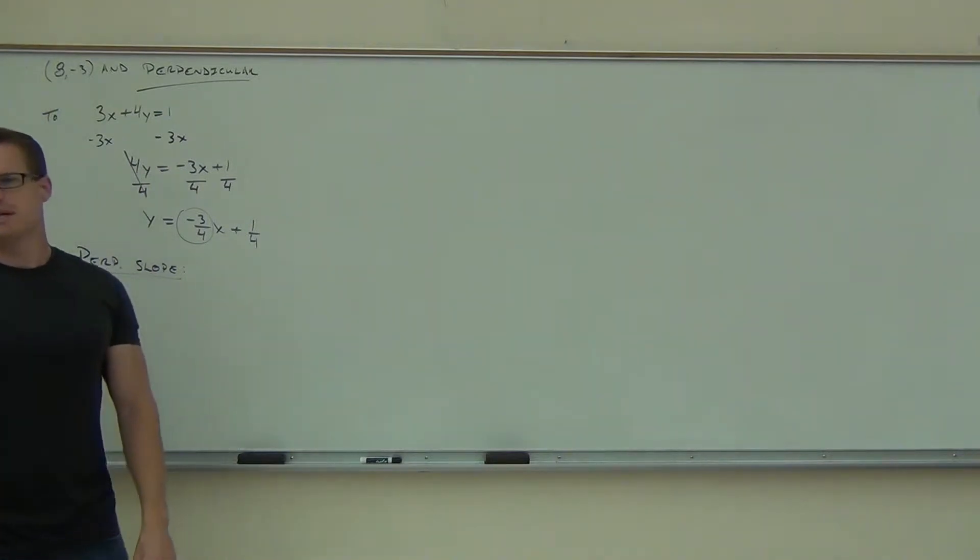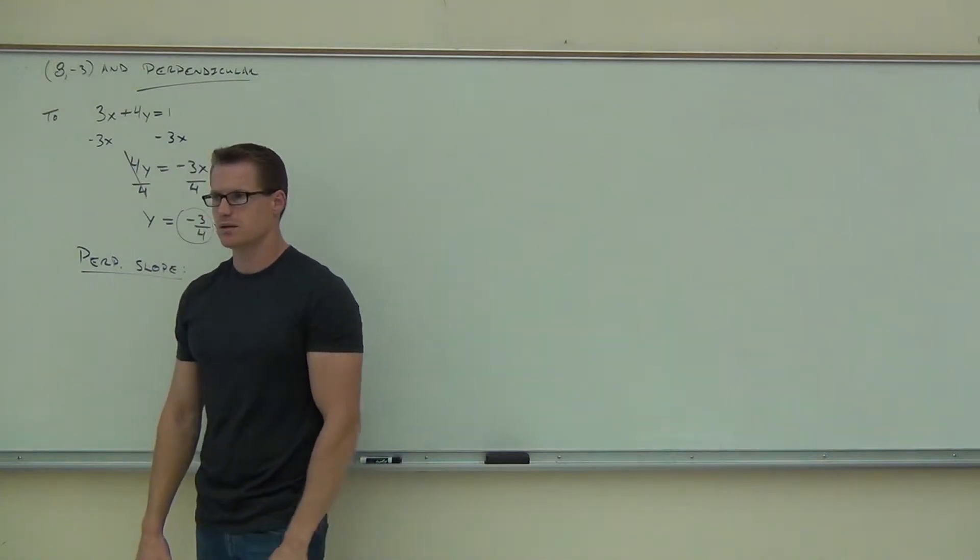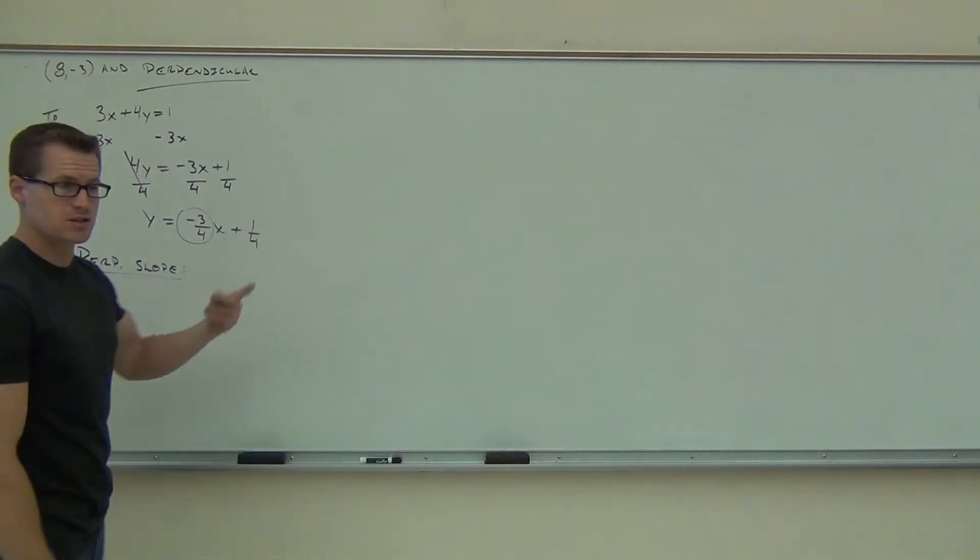We've got to figure out what's a perpendicular slope to negative three-fourths. How much is that? Four-thirds. Good. Yeah, we flip it. We also change the sign.